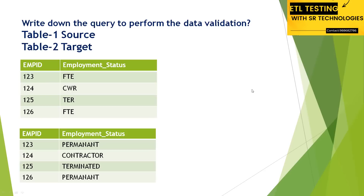So the source data has abbreviations, but in the target they want to see the full names. The second table, employee employment status target, has been populated using an ETL job. Now they are asking us to validate it by writing a SQL query.